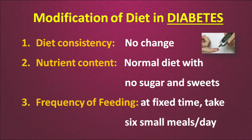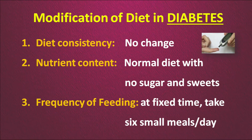Now we will talk about the modification of the diet in case of diabetes. There is no change in diet consistency — you can have normal food — but there is a change in nutrient content: normal diet can be eaten but without sugar and sweets. Frequency of feeding is the same as a normal diet, about 5 to 6 small meals per day, but it is advisable to take all foods at fixed times daily, which helps manage blood sugar levels.